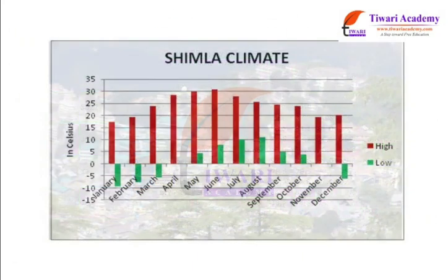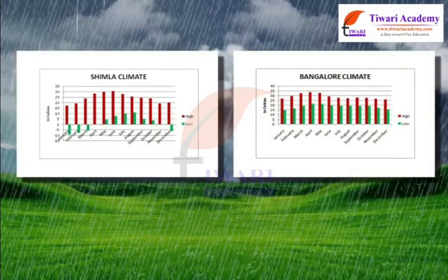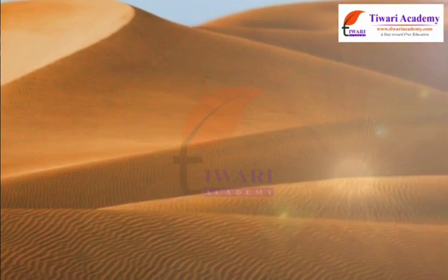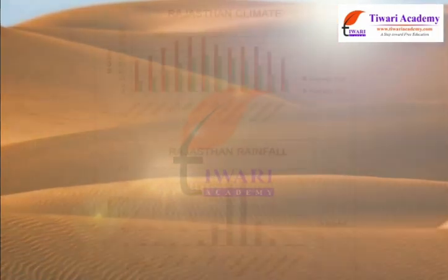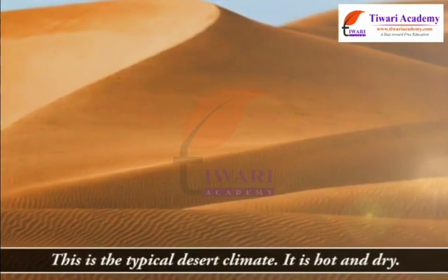The two places are Shimla and Bengaluru. By looking at the tables we can easily see the difference in the climate of Shimla and Bengaluru. Bengaluru is very hot and wet in comparison to Shimla, which has a moderately hot and wet climate for part of the year. Similar data for the western region of India, for example Rajasthan, shows that the temperature is high during most part of the year, but during winter, which lasts only for a few months, the temperature is quite low.